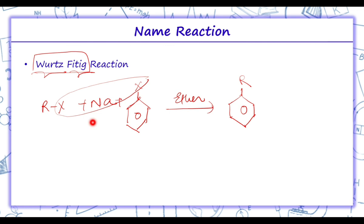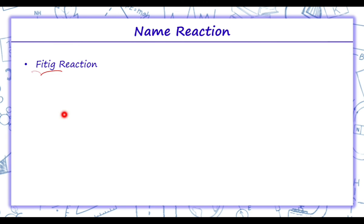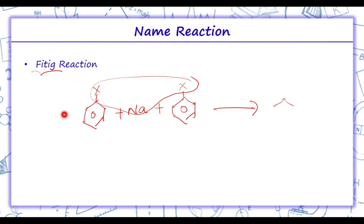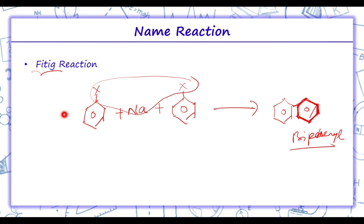Fittig reaction: here two moles of aryl halide are taken with sodium, and NaX is removed to give biphenyl. To summarize — Wurtz is when two moles of alkyl halides are taken; Wurtz-Fittig when one mole of alkyl halide and one mole of aryl halide are taken; and Fittig when two moles of aryl halides are taken. In all these reactions, even numbers of carbon atoms are only prepared.